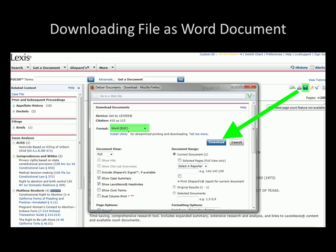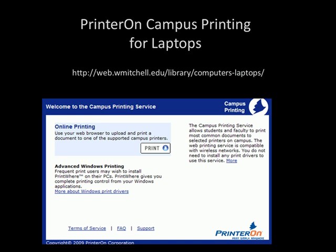If you want to save it, you have the same options in green again: Word, WordPerfect, or PDF. You just download those and then you can save them to your hard drive. Once you have downloaded your document, you can then print it using the printer on service.